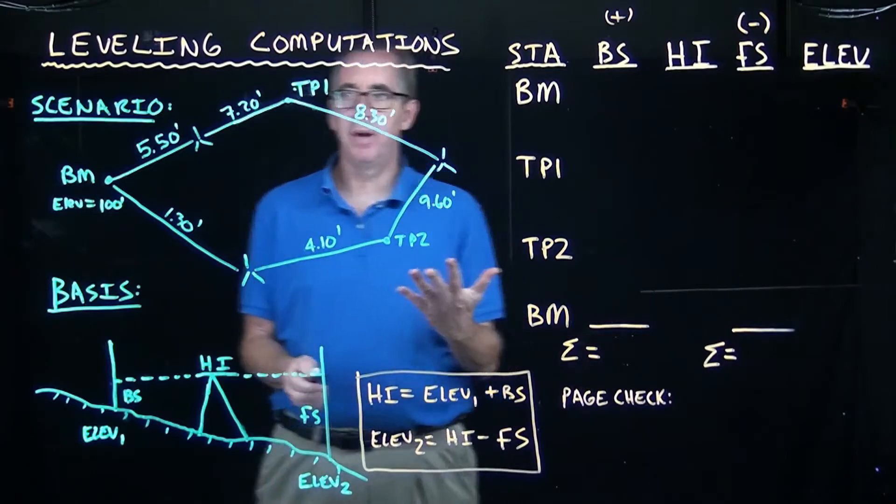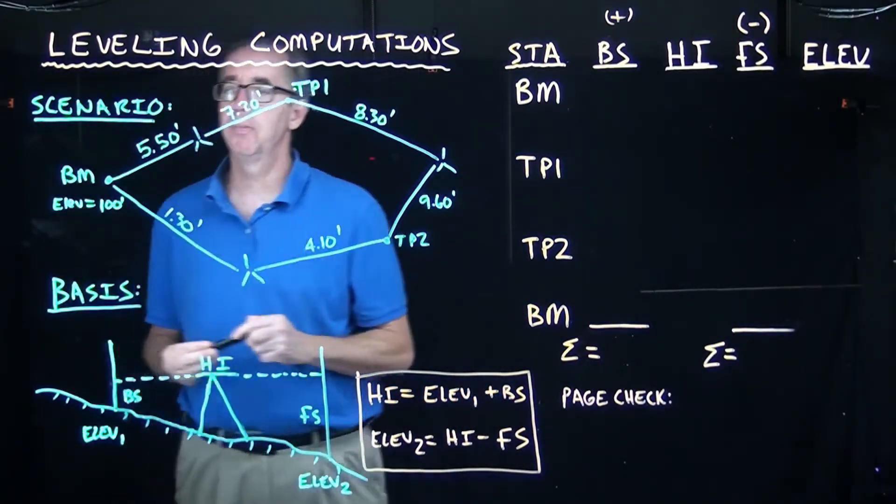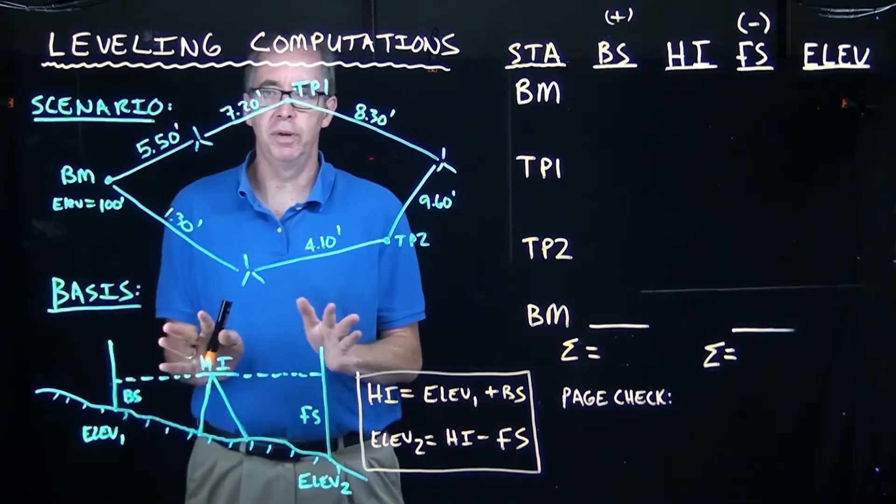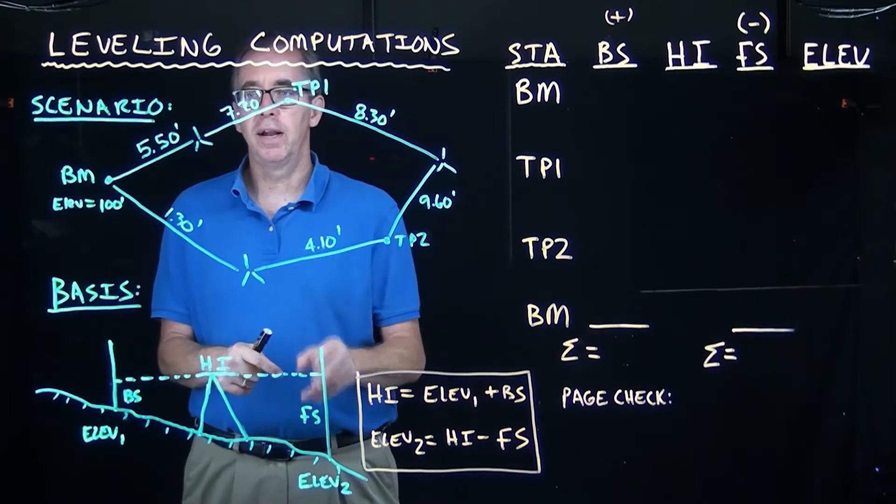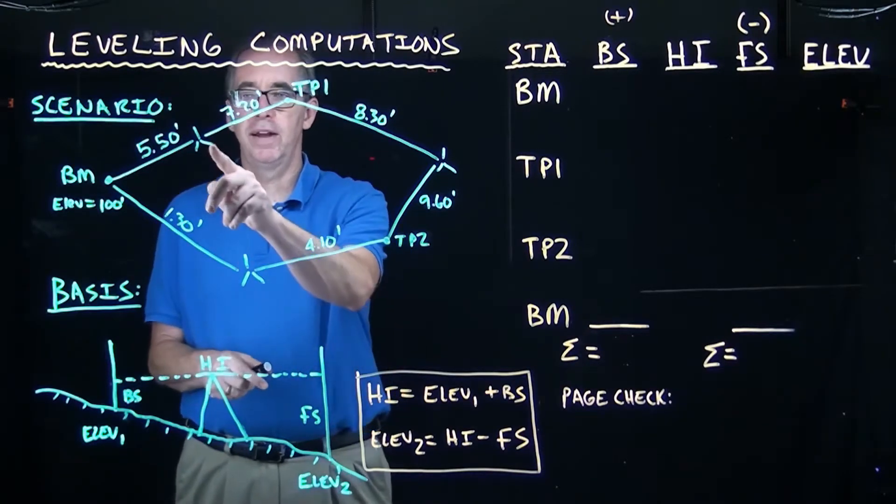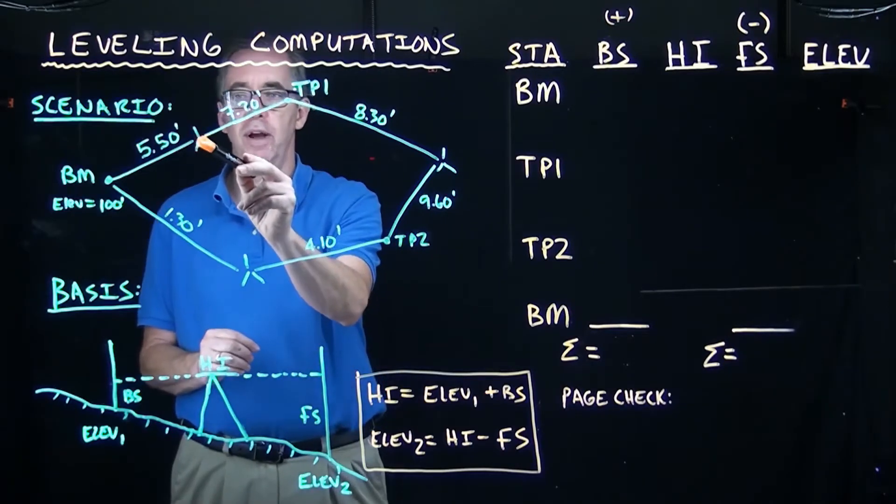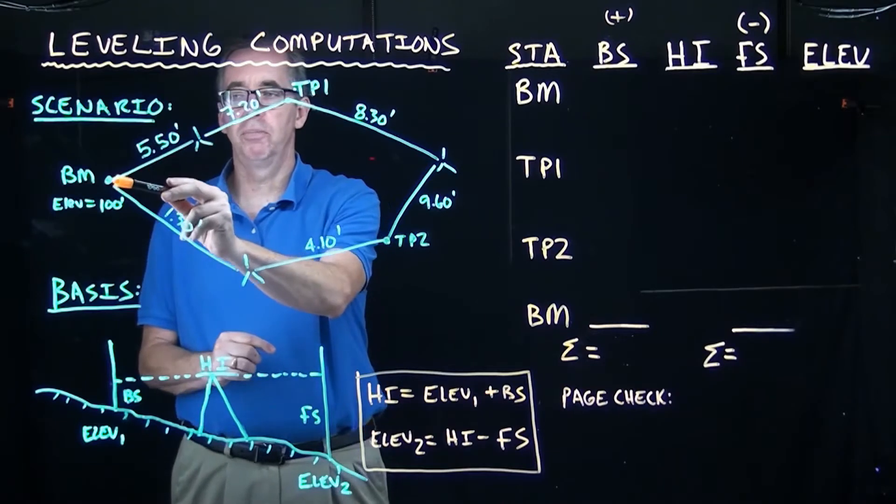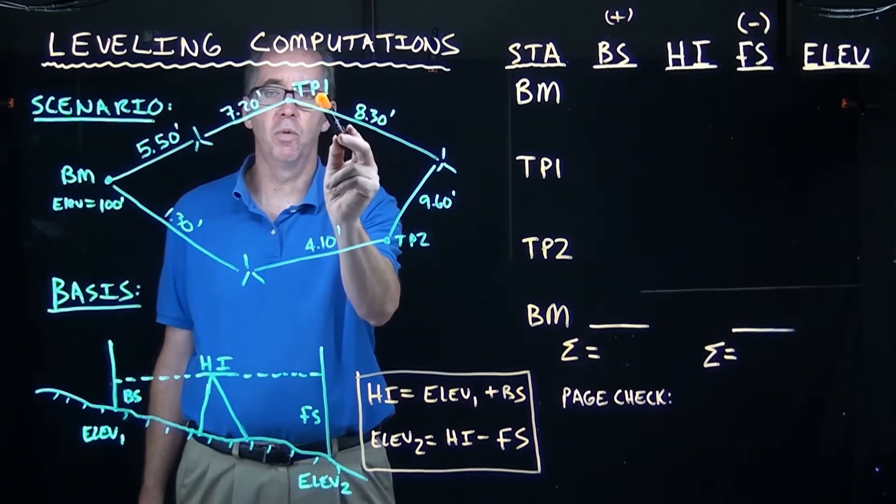So the scenario that we have here is that we're going to start at a benchmark. This benchmark has a known elevation of 100 feet. That's just an assumed elevation. And then what we're going to do is set up our tripod. The first spot that we set up is between the original point, our benchmark, and the first turning point, or turning point one.